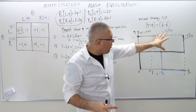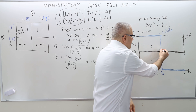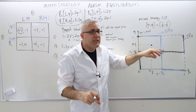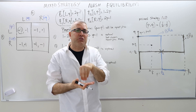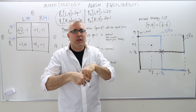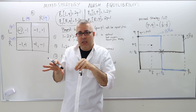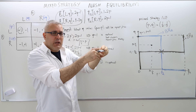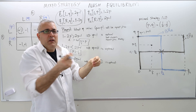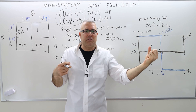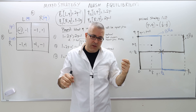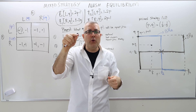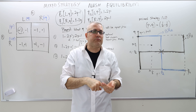Any point on the square other than the intersection will have someone regretting. This intersection point is regret-free because it's on the best response function of both players. Given that I learn your strategy P, the Q I choose is already optimal. And given you observe my Q, the P equals one-half is optimal. So neither player regrets. Drawing best response functions is important because their intersection always gives the Nash equilibrium.